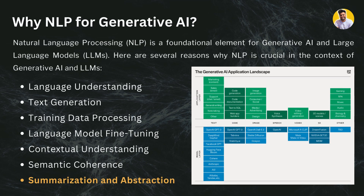The final reason is summarization and abstraction. NLP techniques for text summarization can contribute to generating concise and informative content. When you have a large corpus of data and need a summary, NLP can provide a very concise summarization of that large corpus. Now you know why we use NLP in generative AI.